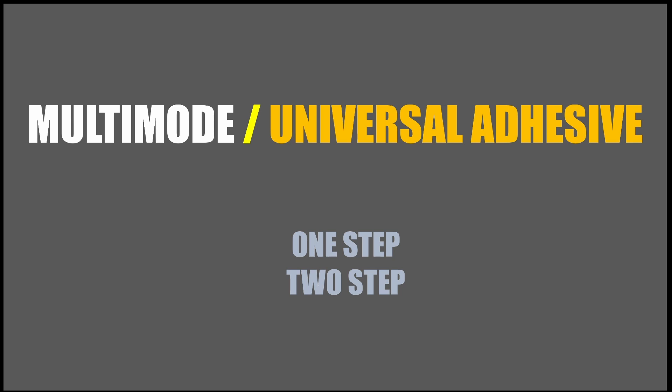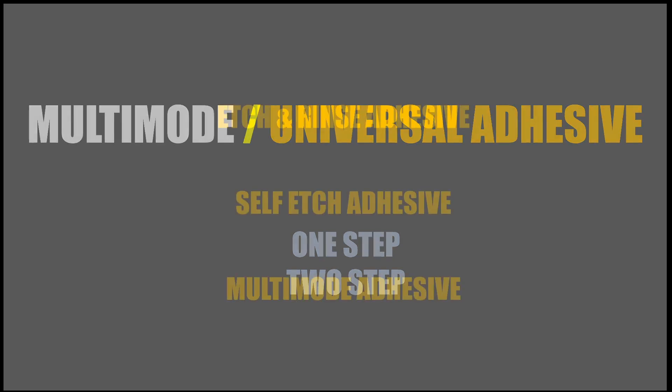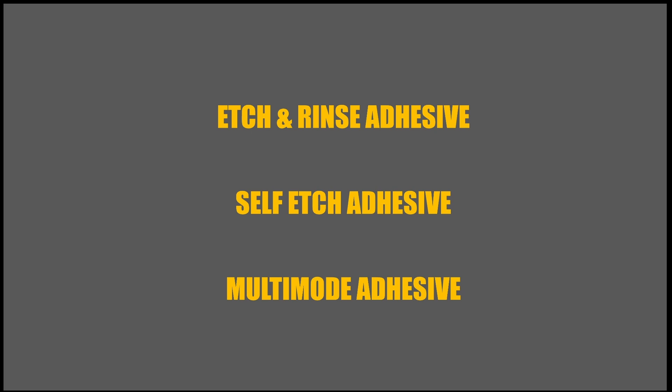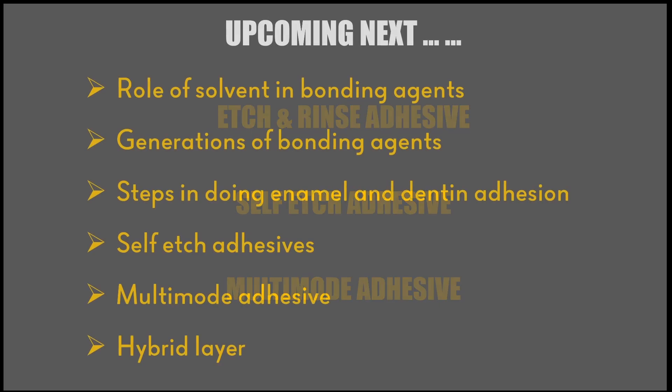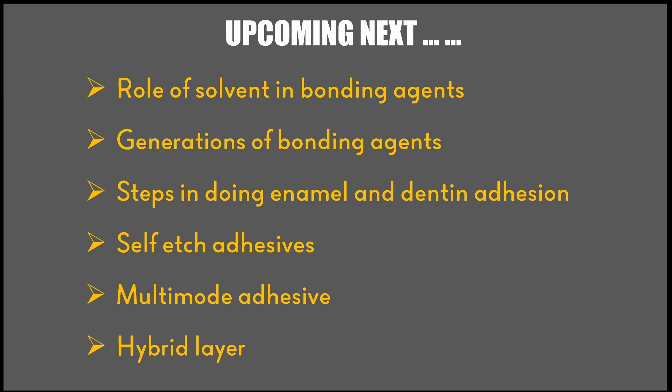To summarize, there are three different types of adhesive materials available. The fourth and fifth generations are called etch-and-rinse adhesives, where we use an etchant, rinse with water, then apply the primer and adhesive separately or together. The sixth, seventh, and eighth generations are called self-etch adhesives, where the primer is made acidic, applied without a separate etchant, and there is no rinsing step. Then comes the multi-mode or universal adhesive system, which can be considered the ninth generation bonding agent.